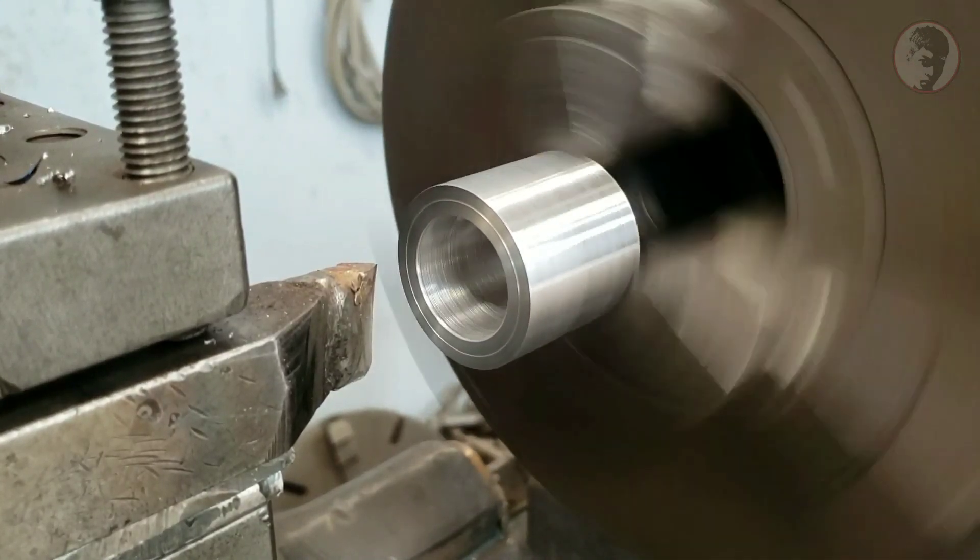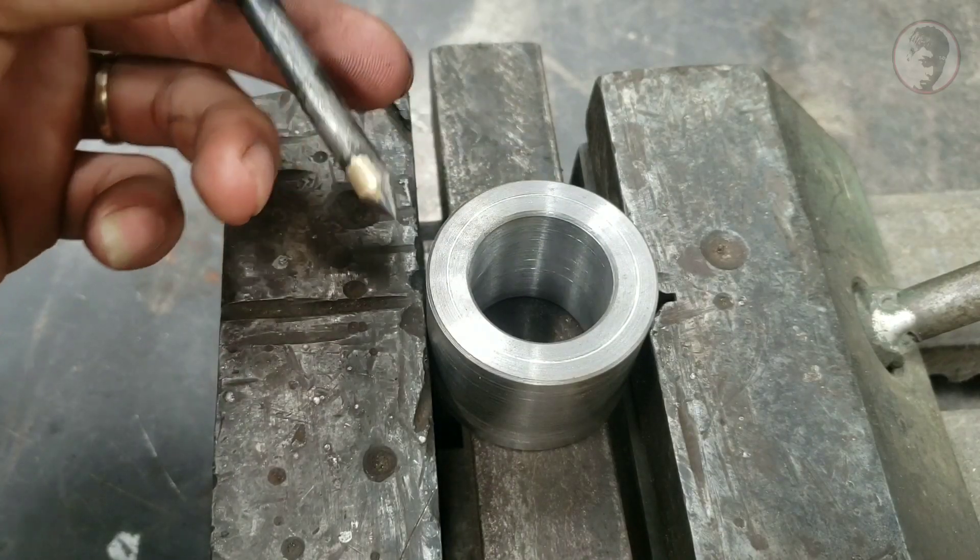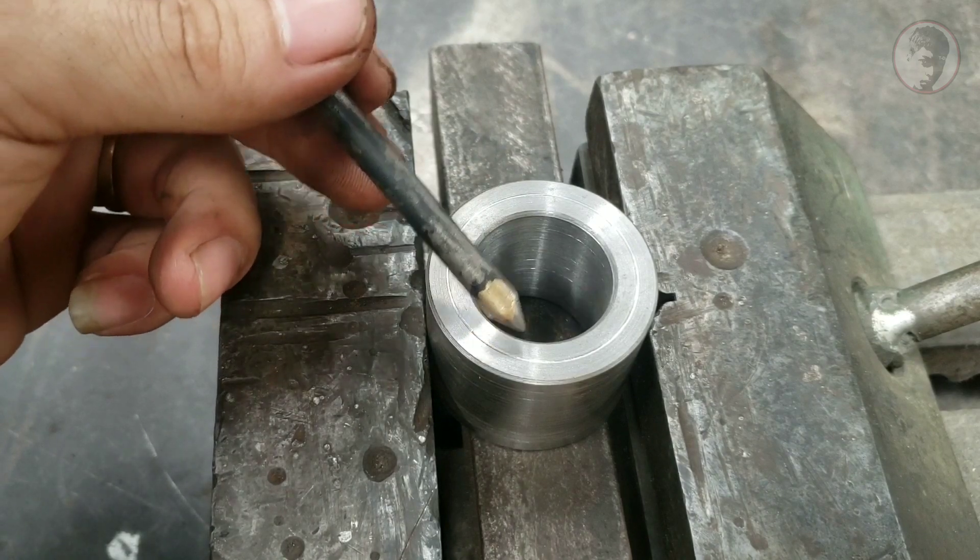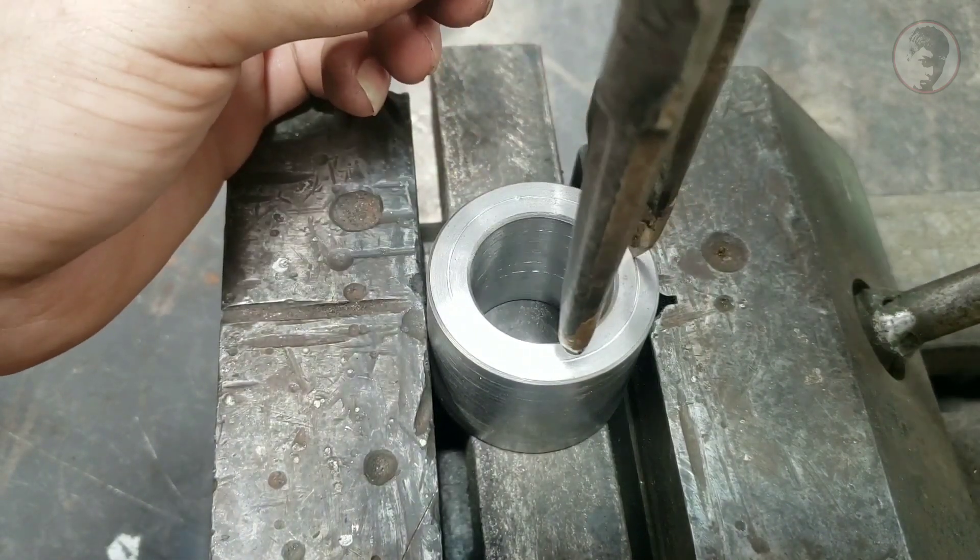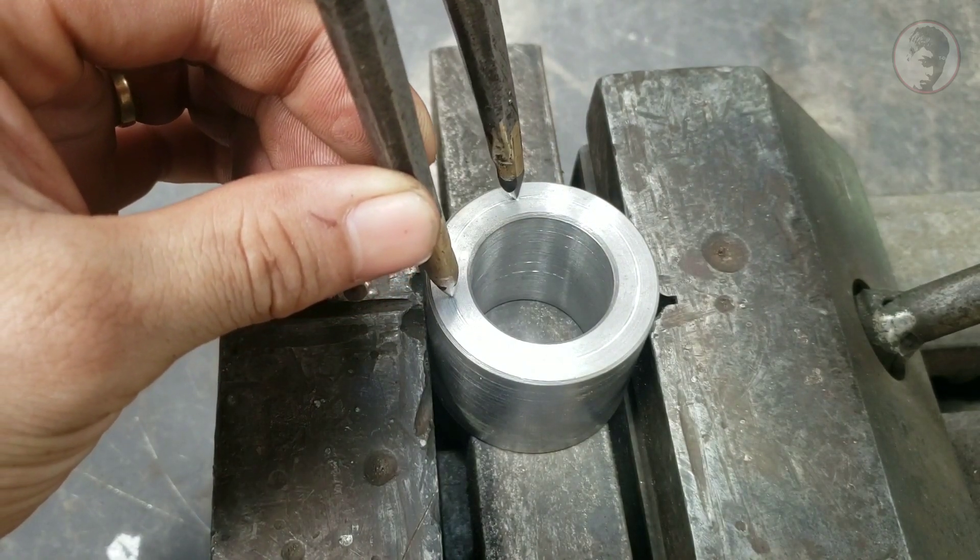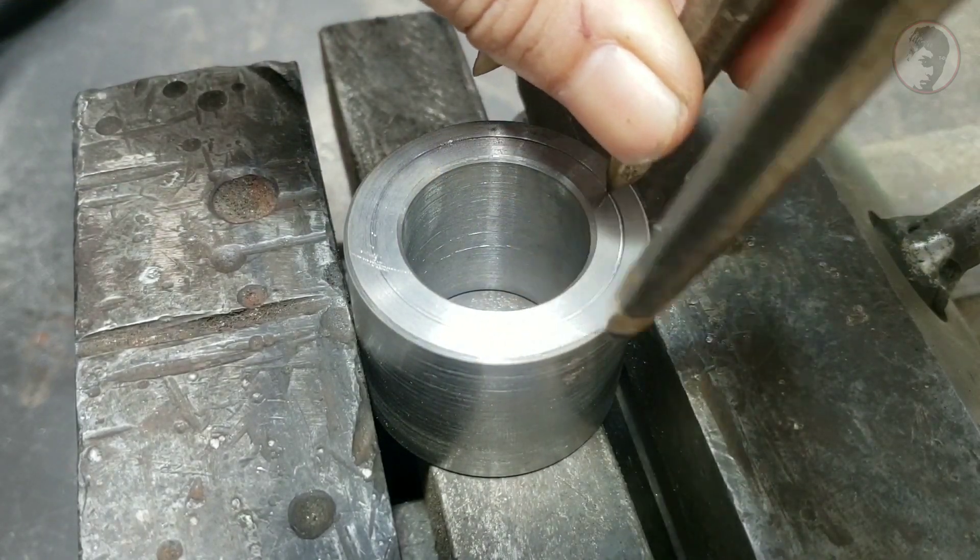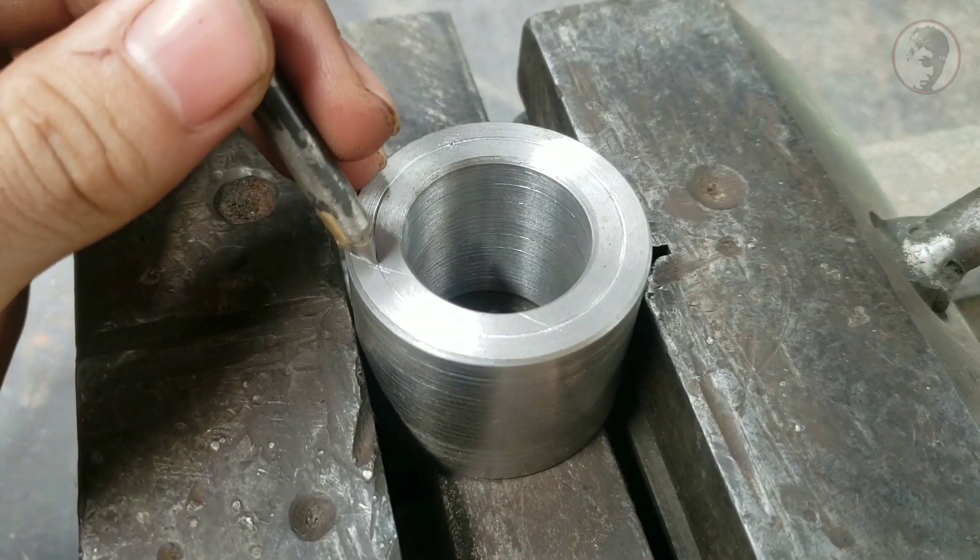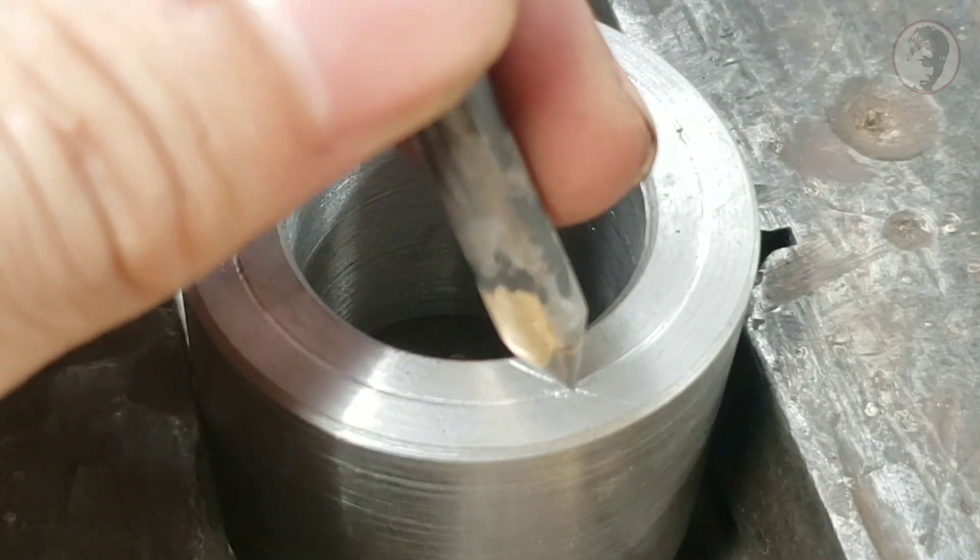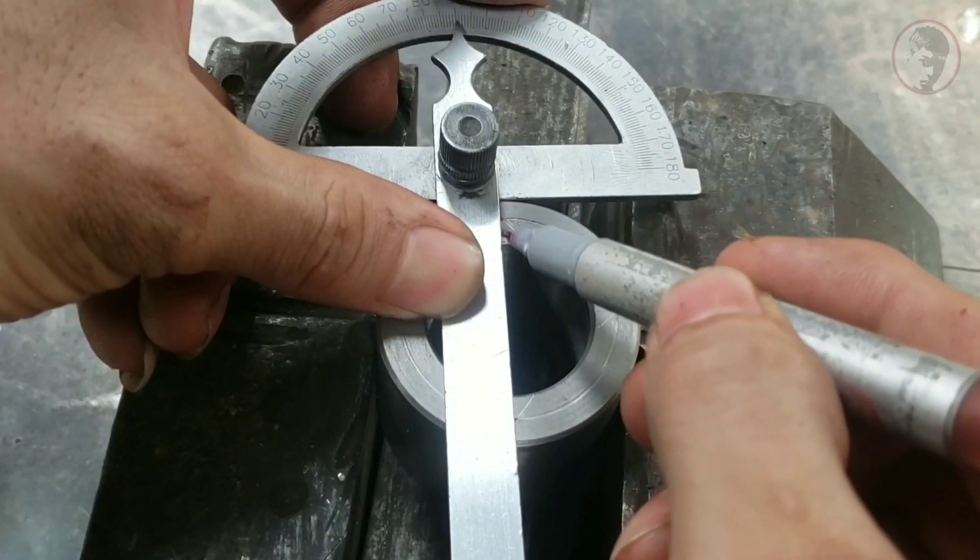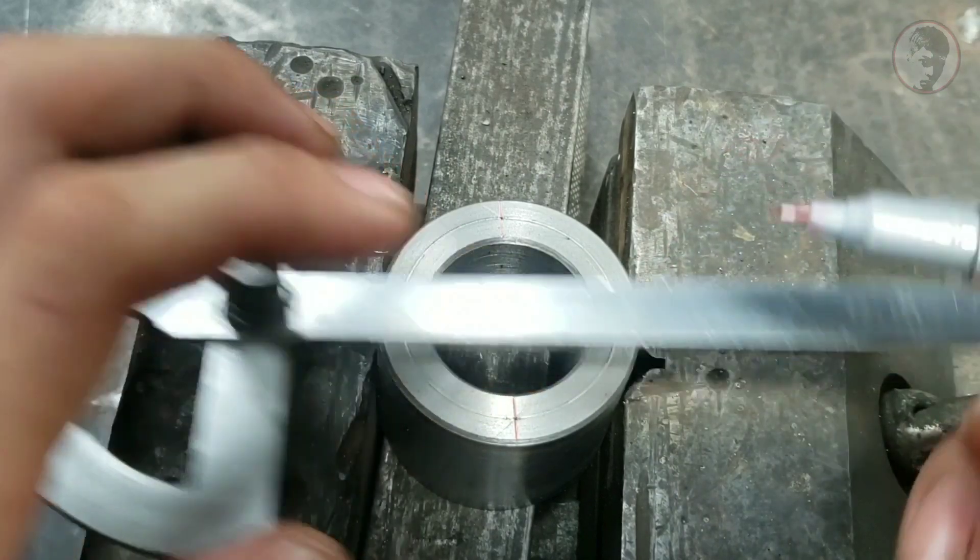Mình sẽ tiện thêm một vòng tâm để lấy dấu. Bây giờ mình sẽ chia 4 điểm đều nhau trong vòng tâm mà mình đã tiện, và kẻ nối các điểm để tạo thành một đường thẳng vuông góc. Như vậy mặt trên của khớp nối đã được chia làm 4 phần.